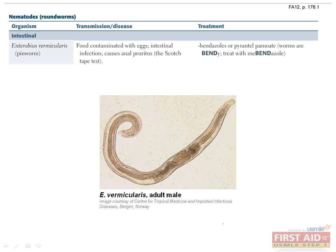Enterobius vermicularis, or pinworm, is a small nematode about one centimeter long. Enterobius infection is the most common helminth infection in the U.S. Transmission is via fecal-oral transmission of eggs, which hatch into larvae in the intestines. The larvae then mature, mate, and adult females migrate out of the anus, where they lay eggs in the perianal skin, causing intense perianal itching. Children who engage in thumb sucking will consume the eggs and continue the fecal-oral cycle. Diagnosed using the scotch tape test; treat with mebendazole or any of the bendazole family — the mnemonic is that worms are bendy.